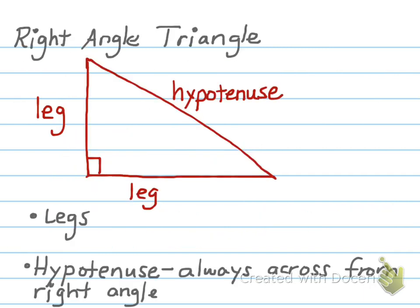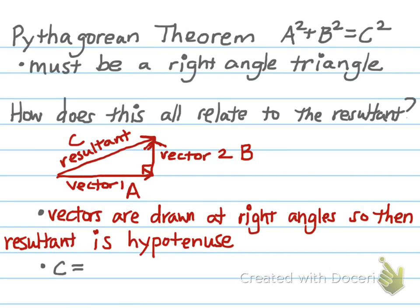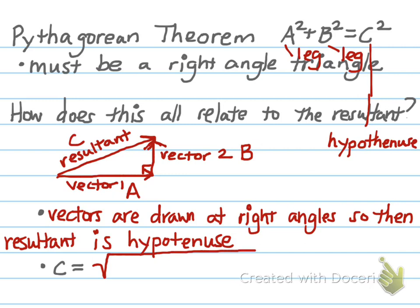Coming back to the triangle: we label the two legs as my a side and my b side, and the hypotenuse as c. In the Pythagorean theorem, a and b refer to the legs and c refers to the hypotenuse. To find the length of c, it's going to be the square root of a squared plus b squared — that's how we calculate the length of the resultant.